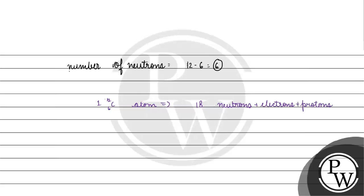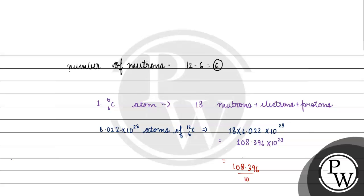So if we have 6.022 × 10²³ atoms of ¹²C₆, the total number of neutrons, electrons and protons will be 18 × 6.022 × 10²³, which equals 108.396 × 10²³. If we adjust the power, we get 1.08396 × 10²⁵.